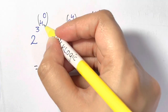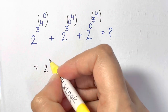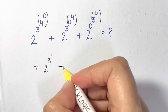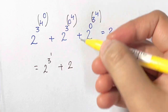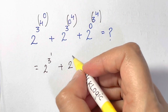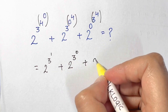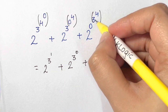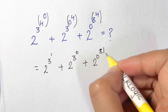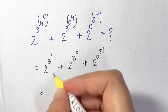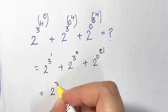Here we have 4 to the power of 0 — anything to the power of 0 is 1. So that gives us 3 to the power of 1. Then 3 to the power of 4 is 81. So now we have 2 to the power of 3 to the power of 1, which is 2 to the power of 3.